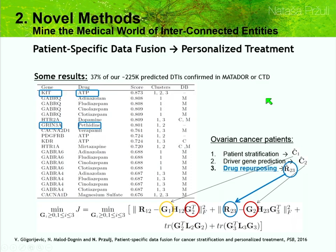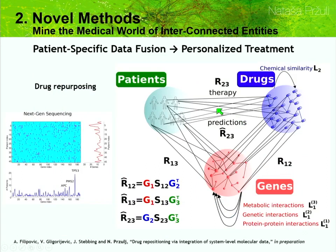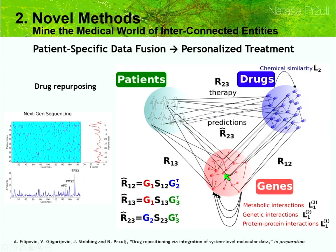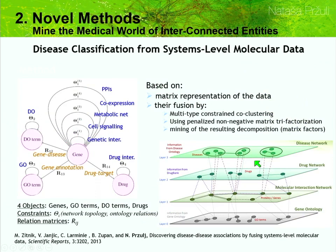This is ongoing work for drug repurposing with patient data from collaborators at Imperial College, where I worked for seven years. To illustrate the beauty of the method: these are patients, these are the therapies that actual patients receive, and these are their mutation profiles. There are drug-target interactions, metabolic interactions, genetic epistatic interactions, and protein-protein interactions. Each matrix is decomposed but sharing factor matrices G1, G2, and G3 across data types. When the method predicts that a particular drug should be given to a particular patient, you know why — through which mutation — providing interpretability, all at the same cost from the same computational framework.